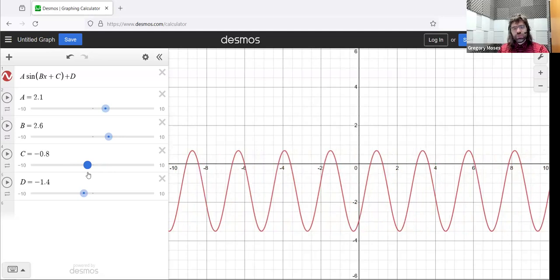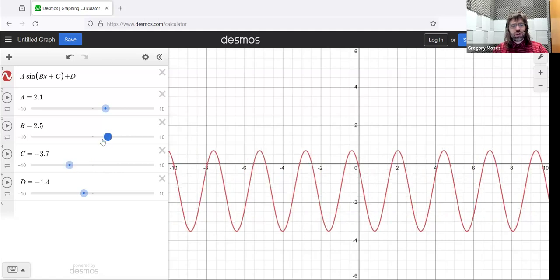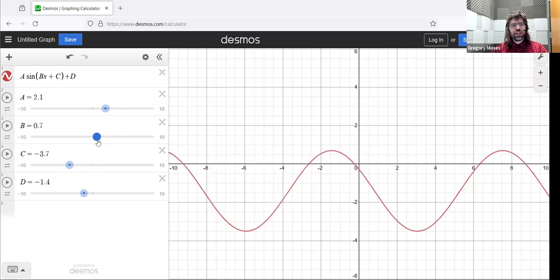I'm afraid I told you a little fib in an earlier video. I said that these four parameters don't interact—that A controls one thing, B controls a second thing, C a third thing, and D a fourth thing. Here's where I have to issue a retraction: the horizontal shift is not only controlled by C, but also by B.